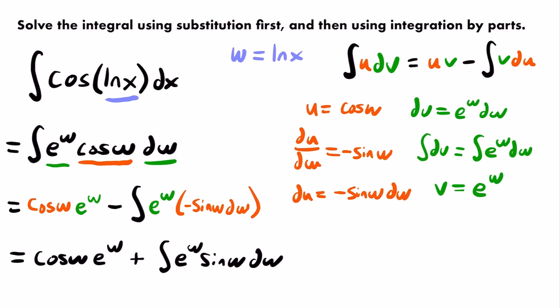We now have a new integral — again a product of an exponential and a trig function. If we use integration by parts a second time on this integral and set u equal to sine, the derivative of sine is cosine. So we're going to get back an integral of e^w times cosine — the same integral we started with. That's the key.